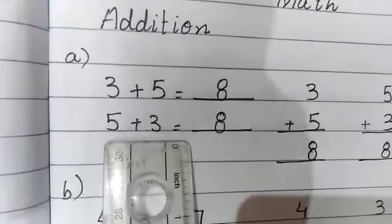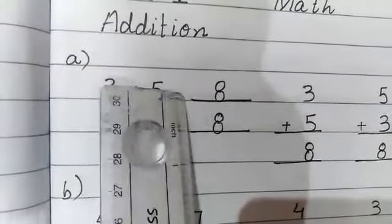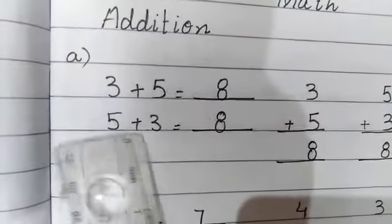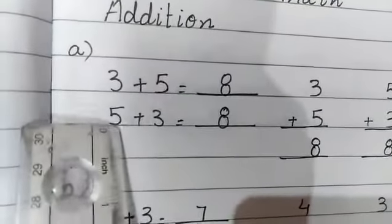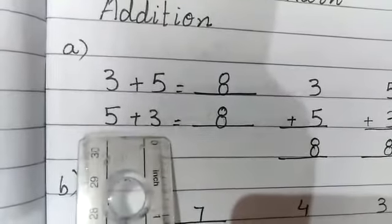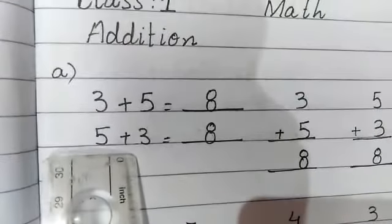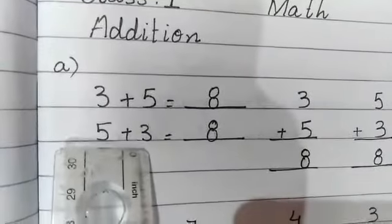5 plus 3. The values, the numbers, places are changed. Okay? And the answer is same, 8. Keep 5 in your mind and 3 fingers out. What is in our mind? 5, 6, 7, 8.